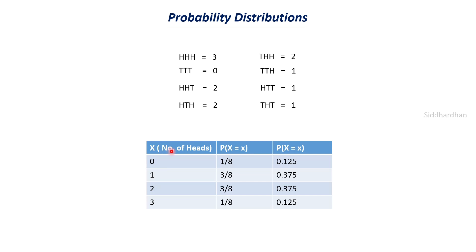So x is the random variable — the sum of the number of heads. You can get x equals 0, meaning all coins are tails; x equals 1, meaning one head and two tails; x equals 2, meaning two heads; and x equals 3, meaning all three heads. The total number of outcomes is 8. The probability of getting 0 heads is 1 out of 8, since there is only one way all coins can be tails.